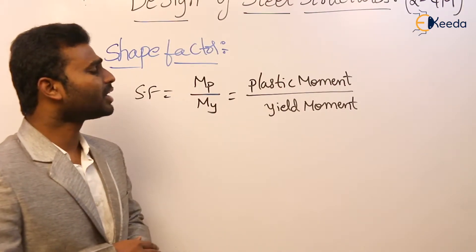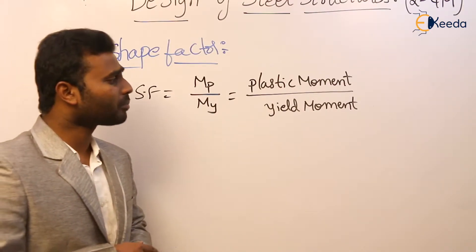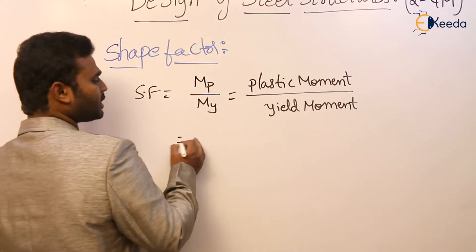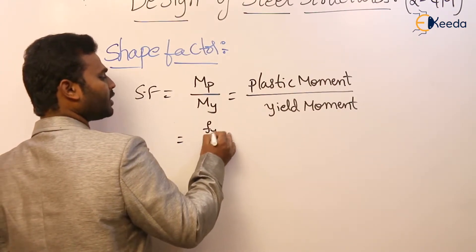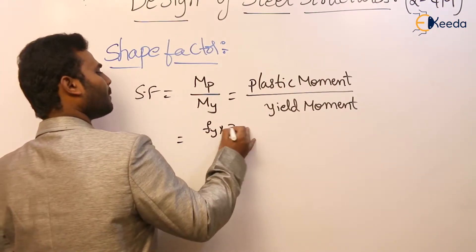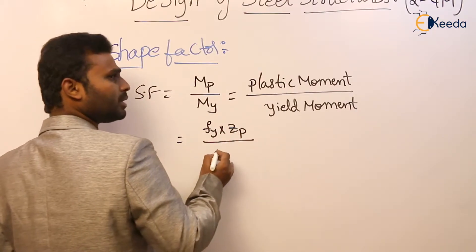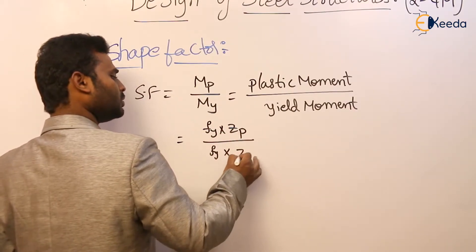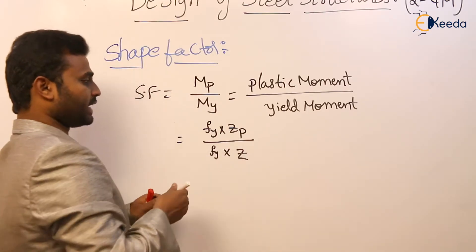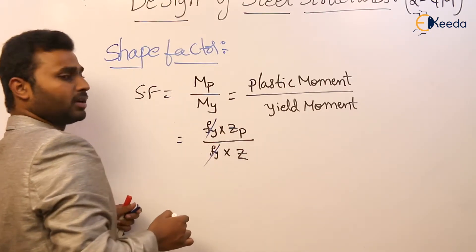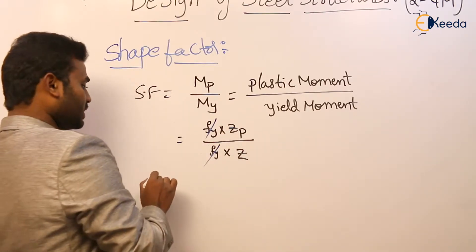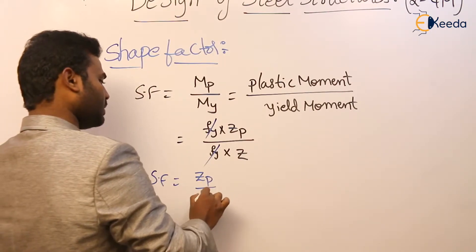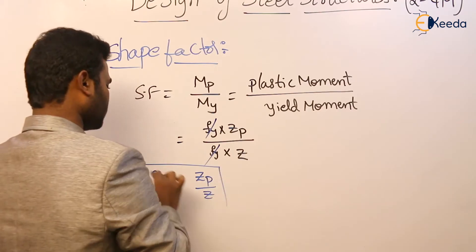We have already derived the formula for plastic moment and yield moment. Plastic moment is FY into ZP, and yield moment is FY into Z. Cancelling FY from both, the shape factor is nothing but ZP by Z.